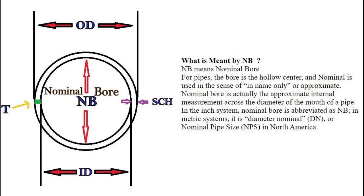What is meant by NB in piping systems? NB means nominal bore. For pipes, the bore is the hollow center, and nominal is used in the sense of 'in name only' or approximately. Nominal bore is actually the approximate internal measurement across the diameter of the mouth of a pipe. In the inch system, nominal bore is abbreviated as NB. In the metric system, it is diameter nominal, or DN.